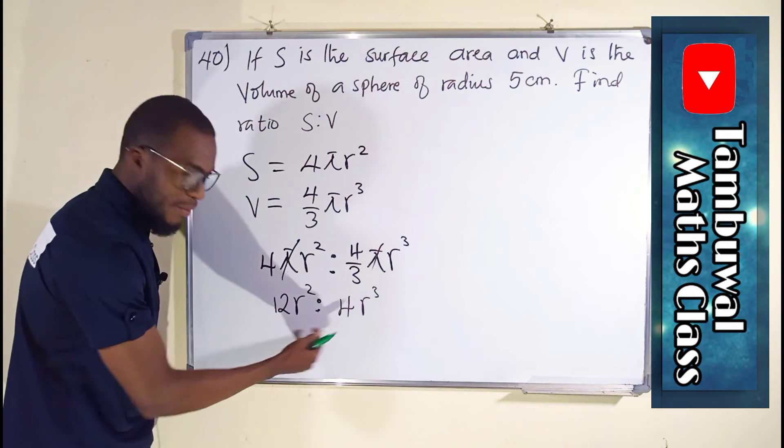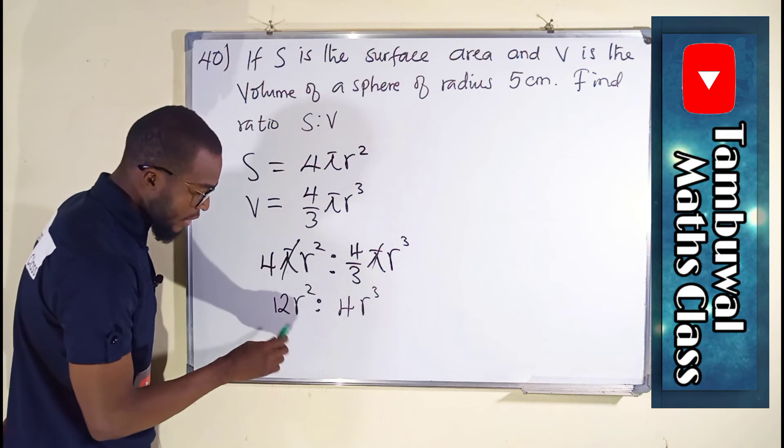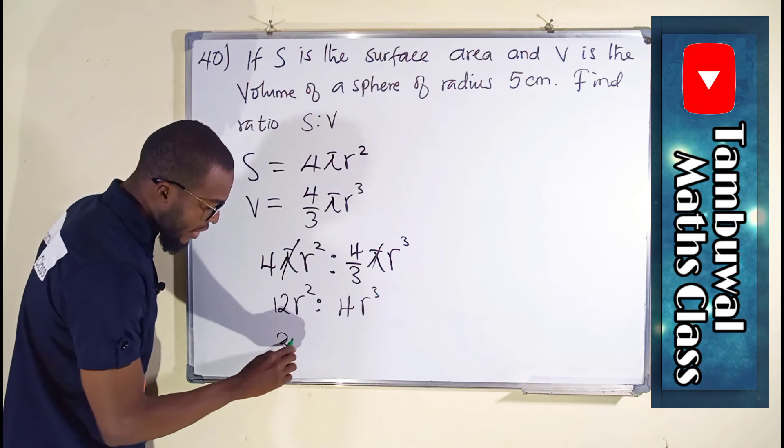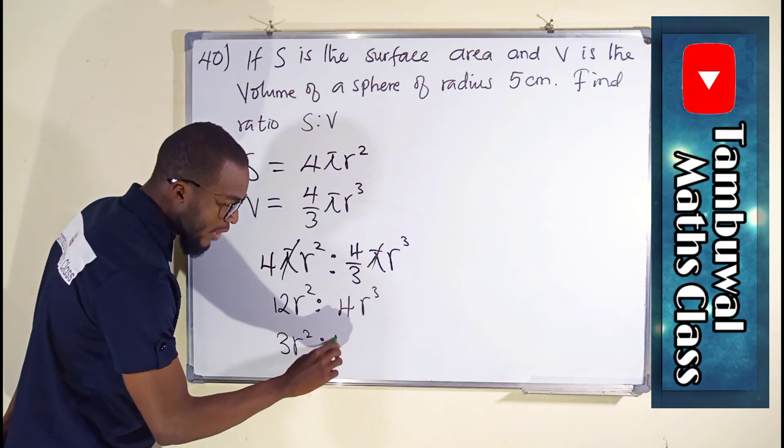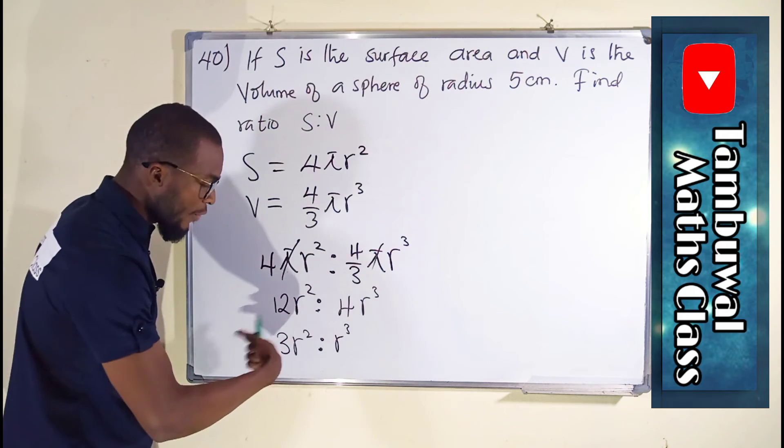Again, I can divide both sides by 4. 12 divided by 4 is 3. So, I have 3 here. I have r to the 2nd power. And here, I have only r to the 3rd power because we divide both sides by 4.